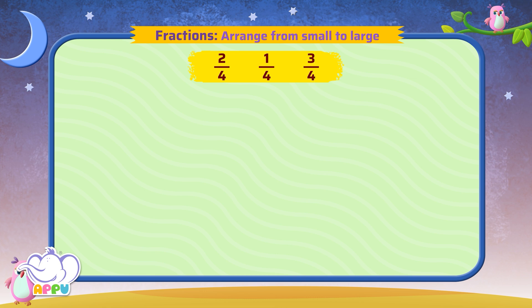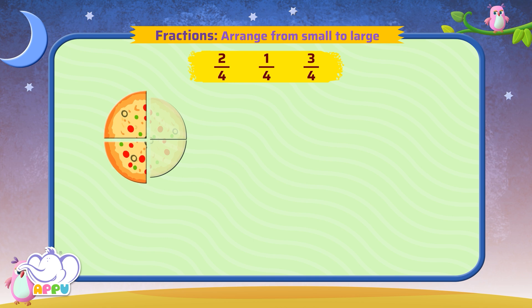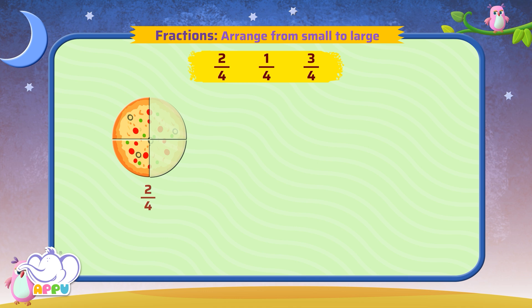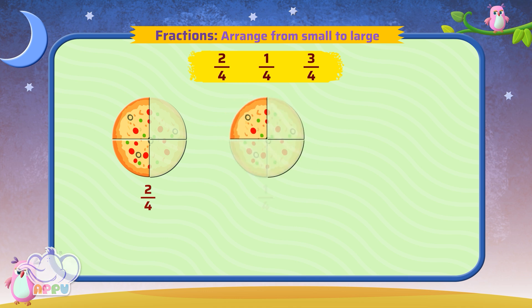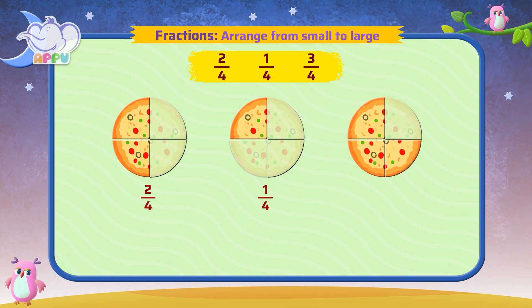Only for the first one, we take a pizza as an example to solve it. We have three fractions. 2 by 4 means 2 parts out of 4. 1 by 4 means 1 part out of 4. 3 by 4 means 3 parts out of 4.